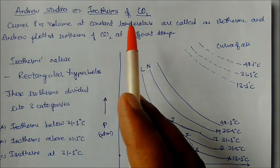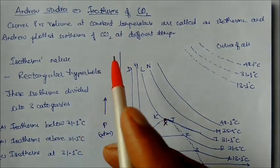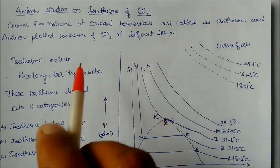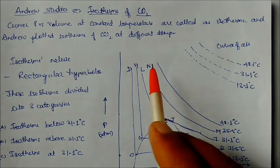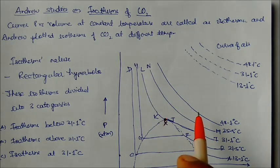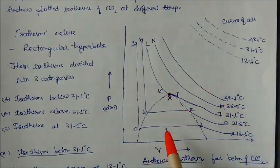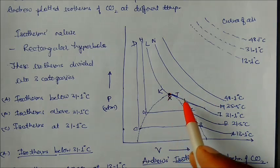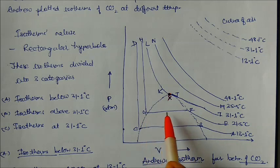Andrews studied isotherms of carbon dioxide. If carbon dioxide were an ideal gas, the curves would be rectangular hyperbolas at constant temperature. But looking at the actual diagram, different types of curves are drawn at different temperatures. As temperature decreases, the curves change: some remain smooth, but others develop a horizontal line portion.